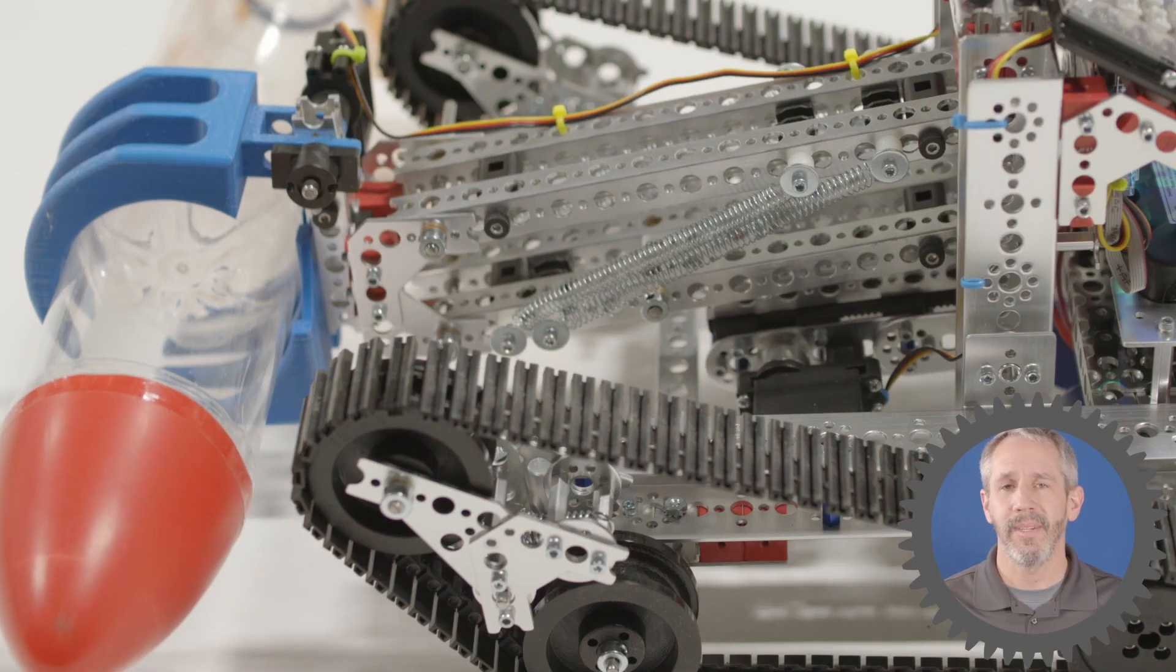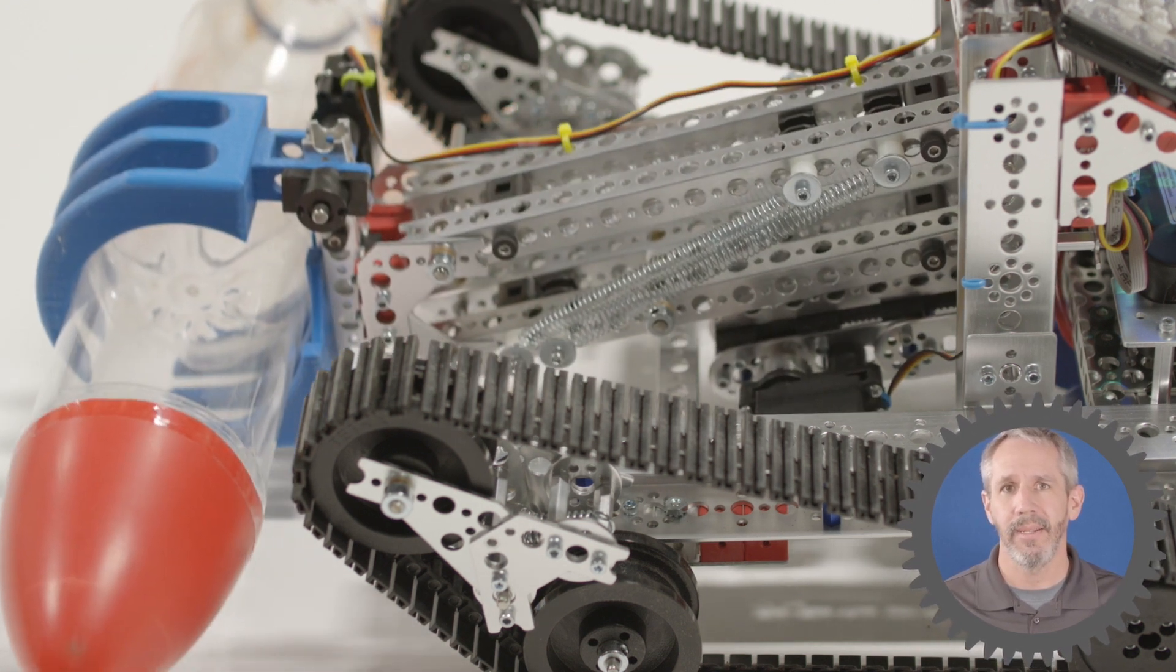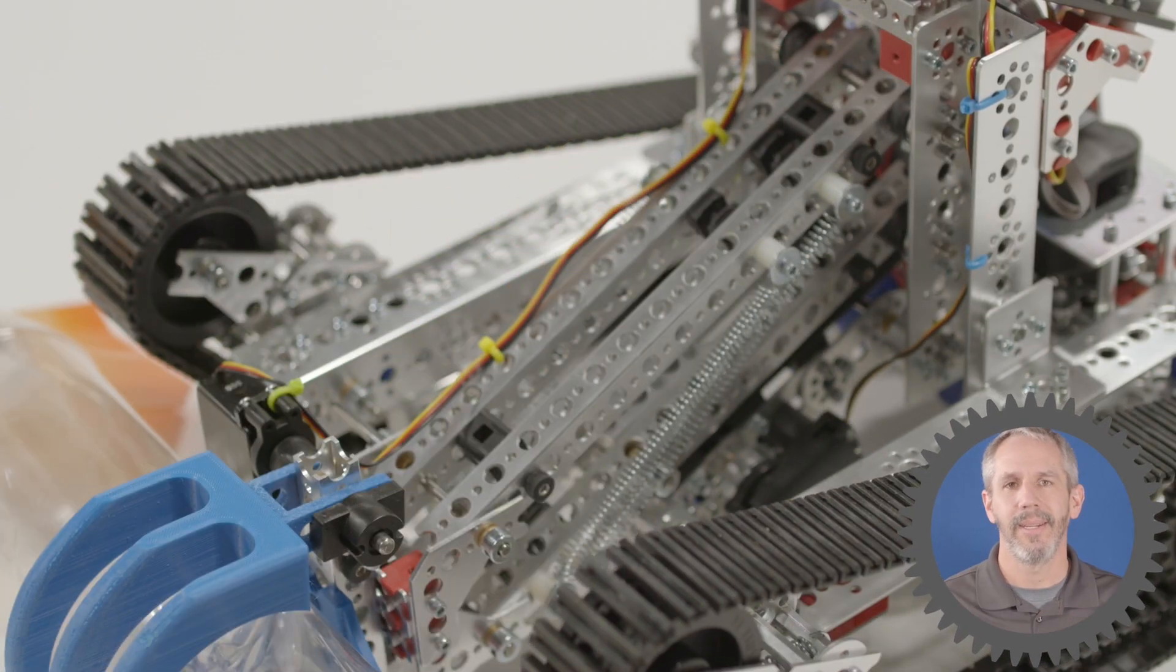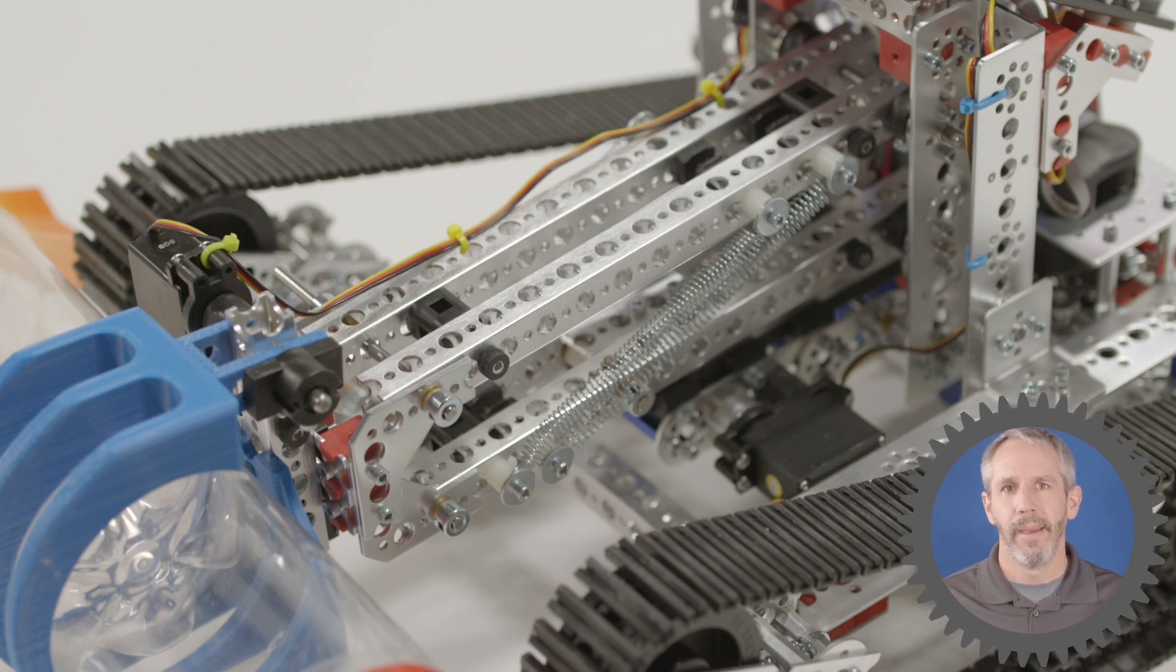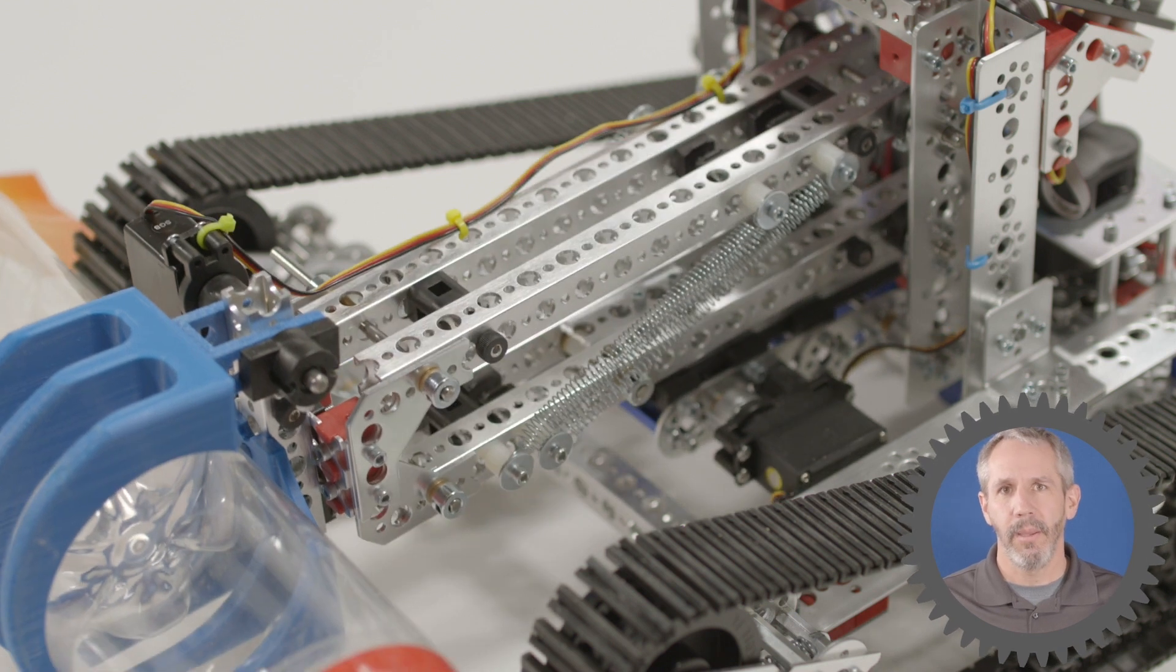Another way to increase the lifting capacity of your mechanism is to use passive assistance. Passive assistance like springs, rubber bands, or counterbalances help the robot lift the mechanism. This robot is using a parallel linkage to lift a rocket. As the lift arm comes down, the springs expand, but then as it lifts the rocket, the springs retract, helping to pull the arm up.